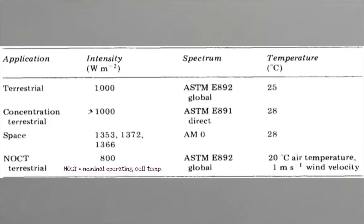For concentrated solar, the intensity is much larger than 1000 W/m², scaled by the concentration factor. The spectrum is typically the direct part, not the global part, because when you concentrate sunlight you can only concentrate the direct component — we know this from the acceptance angle limitation of the concentrator. You also go to a slightly higher temperature due to higher light intensities. For space applications or a different planet like Mars you use a different intensity. Right outside Earth we use the AM0 spectrum.